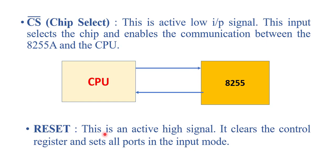Next is Reset — an active high signal, since there is no bar over it. When activated, it clears the control register and sets all ports to input mode. Since 8255 operates in various modes determined by the control word register, this Reset pin is used to clear the content of the control word register of 8255.